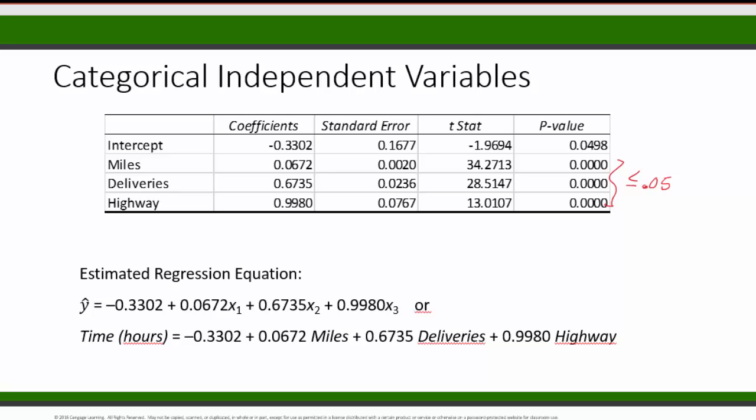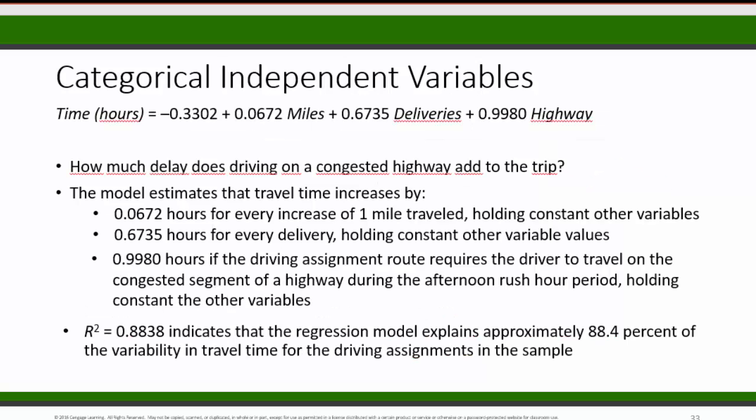So here is the estimated regression equation. In terms of x's and y's, it looks like this. And using the original names of the columns, the regression equation looks like this. So having added this factor about the rush hour congested highway driving, I would be curious to know how much delay the driving on a congested highway adds to the trip. That is, how much more time does it take if you have to drive on a congested highway?